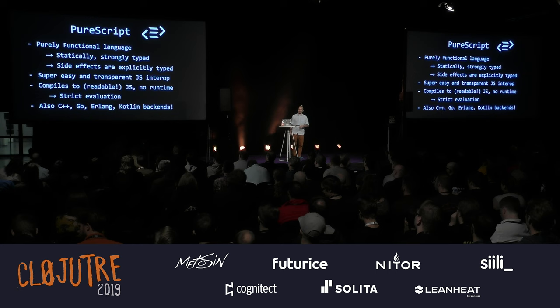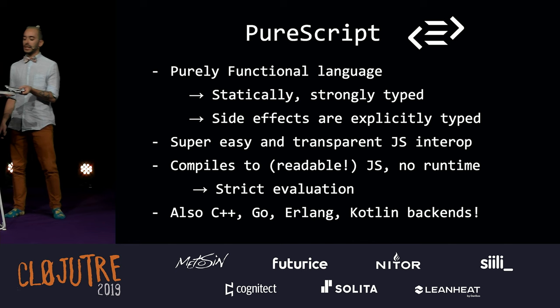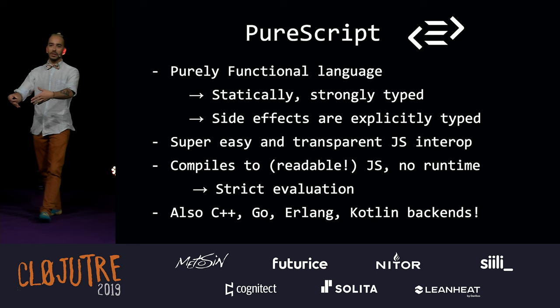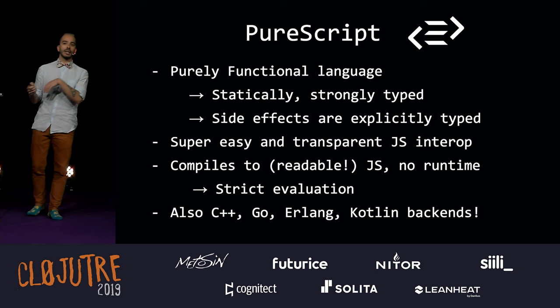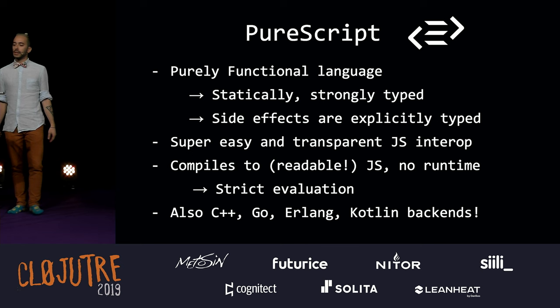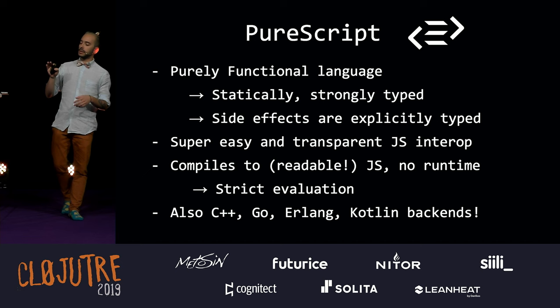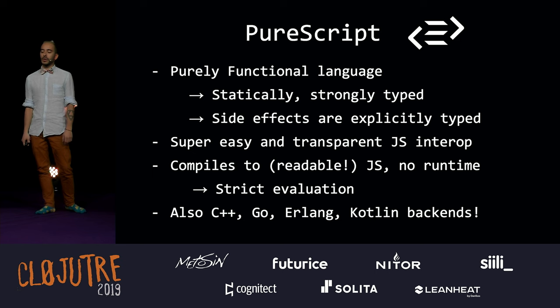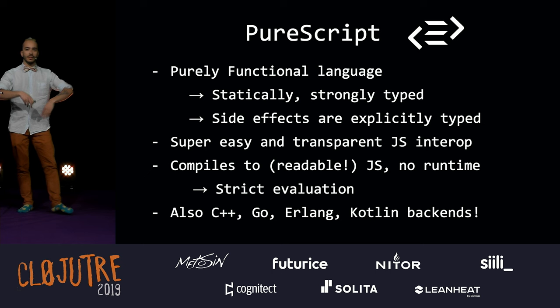So I guess I have to do this introduction. PureScript is a purely functional language. If you have done Haskell, you can pick it up in a short time. It is statically and strongly typed, meaning that the compiler can give you a lot of assurance. Side effects are explicitly typed, so if you're doing side effects, you have to reflect that in the type of the program, and this helps preventing lots of bugs. PureScript compiles to JavaScript as the main backend, and interoperability with JavaScript is very easy. It also compiles to readable JavaScript. It has strict evaluation, and that's the main difference with Haskell. It has several other backends — you can compile it to C++, Go, Erlang, Kotlin, and more.